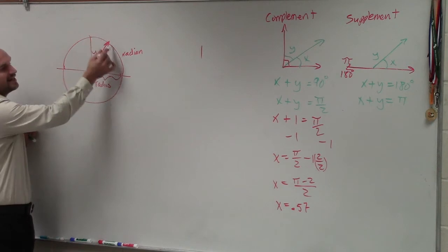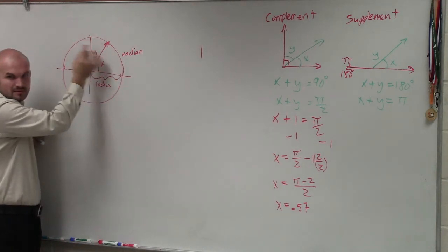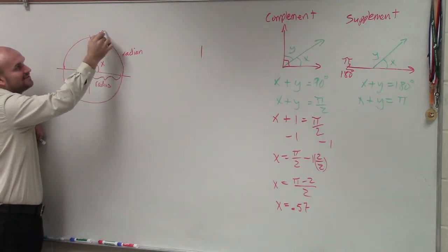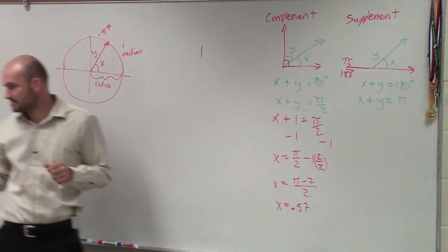And does that look like from here to here? Does that look like just over half a radian, roughly? Radian measure is from here to here. So that's 0.57 of a radian, and that's one radian. Does that make sense?